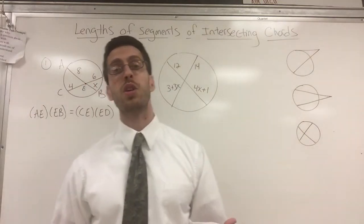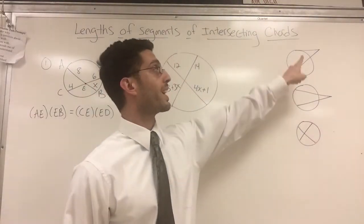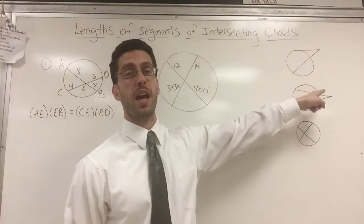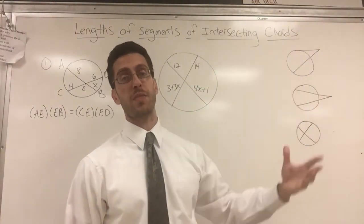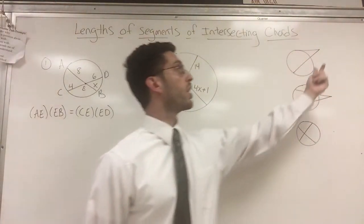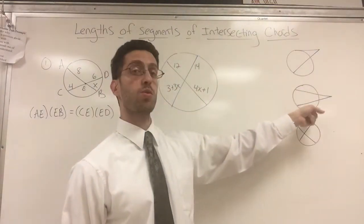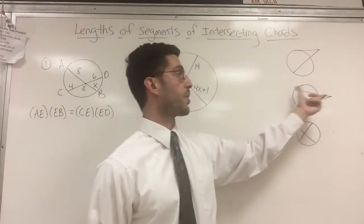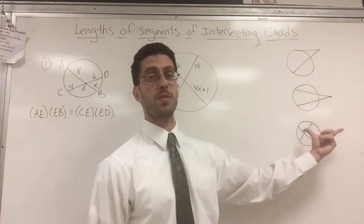You gotta know what you're looking at before you can even determine the formula. If you're looking at a tangent and a secant, there's a different formula that's tangent squared equals external times entire. If you're looking at two secants, that's external times entire equals the other external times the other entire.